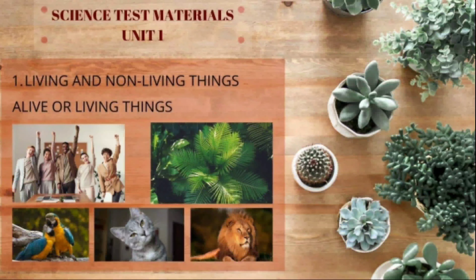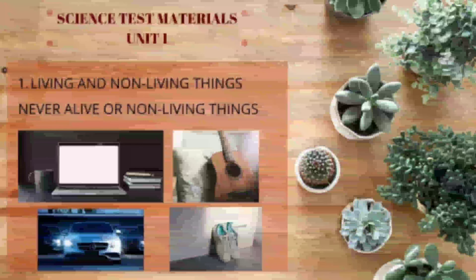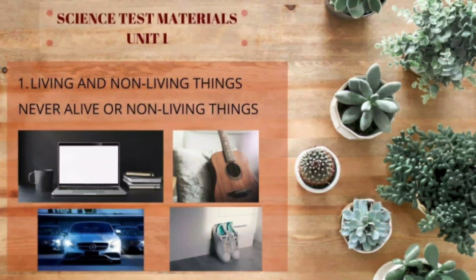Now, I will explain the science test materials for Unit 1, because next week you will have your first test. The first material is about living and non-living things. Take a look at the picture of things that are alive. Living things are humans, plants, and animals. And those are the examples of non-living things.